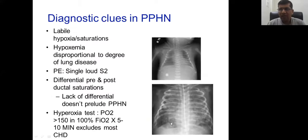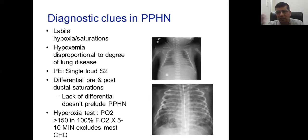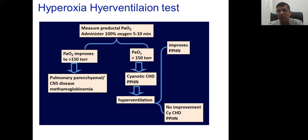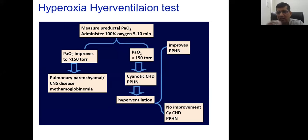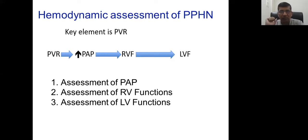The clinical features: labile hypoxia — the baby doesn't like touch, light, handling, or suction. You want to keep these babies undisturbed. Disproportionate hypoxia with pre- and post-ductal saturation difference greater than 5–10% indicates serious trouble. Murmur of TR jet is present. Nowadays we don't do the hyperoxia test much because of bedside echo availability in most centers; if you don't have echo, do the hyperoxia test plus hyperventilation test, then echocardiography.